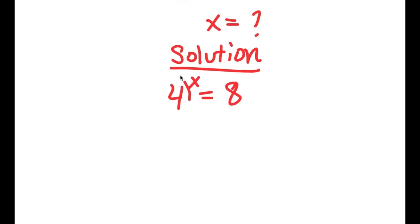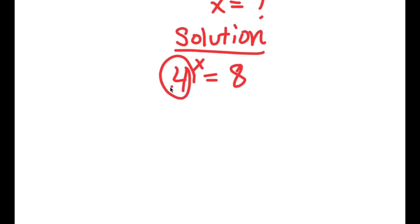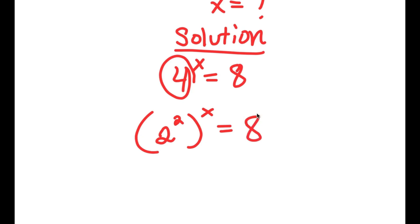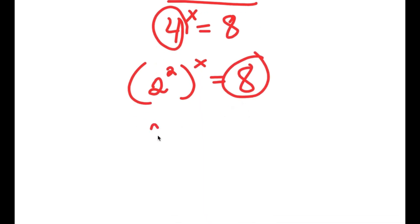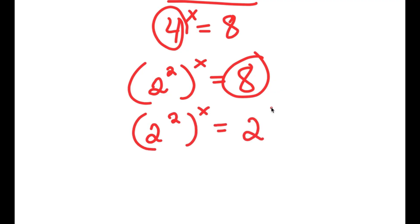Now 4 is the same thing as 2 squared, so I'm going to rewrite this as 2 squared to the power of x. And 8 is the same thing as 2 to the power of 3, so I replace 8 with 2 to the power of 3. So I have 2 squared to the power of x is equal to 2 to the power of 3.